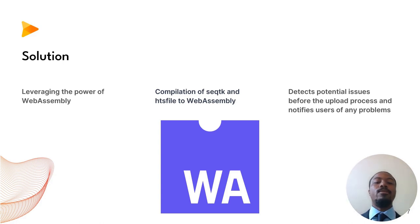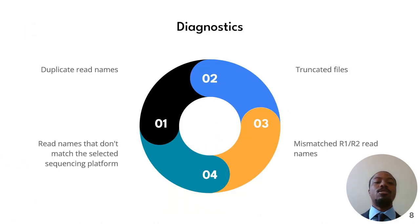By compiling HTSlib and HTSlib file tools to WebAssembly, we can execute various diagnostic checks on a small subset of each FASTA or FASTQ input file directly within the user's browser. This allows us to detect and notify the user of any potential issues before the upload process begins. Diagnostics include detecting duplicate read names, truncated files, mismatched R1/R2 read names, and detecting read names that don't match the selected sequencing platform.